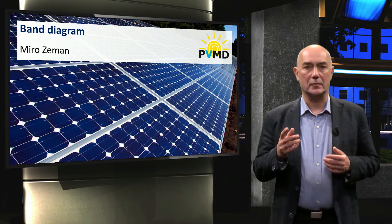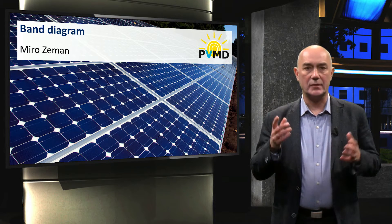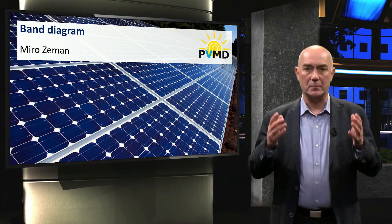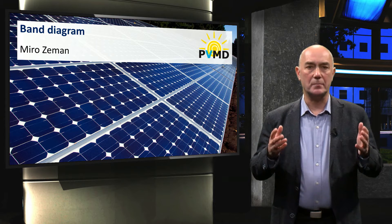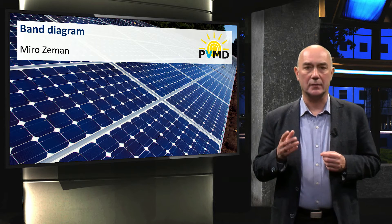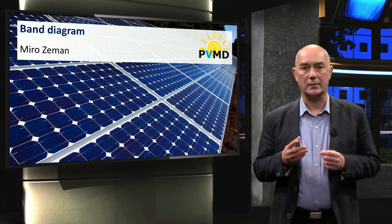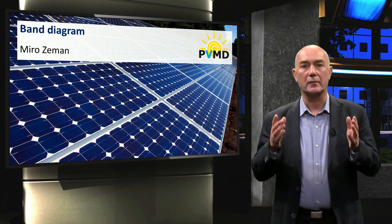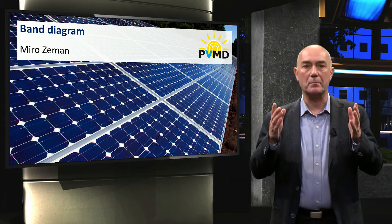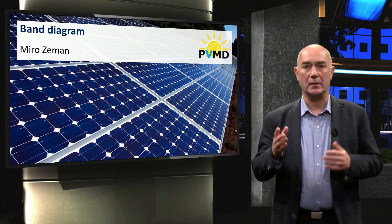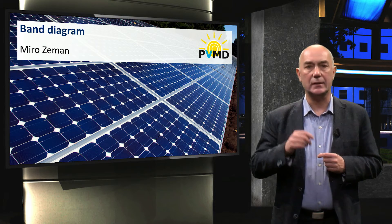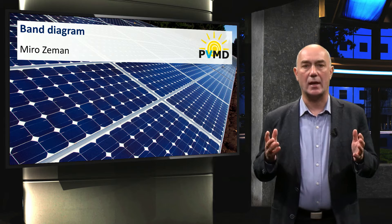In the previous video, we discussed silicon, which is the most used material in photovoltaics. In this video, we introduce the band diagram, for which we will use silicon as an example.